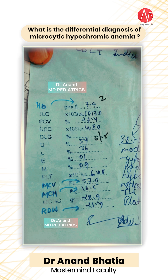For children aged six months to five years, the classification is: less than 7 g/dL is severe anemia, 7 to 10 is moderate anemia, 10 to 11 is mild anemia, and more than 11 is non-anemic. So this patient has moderate anemia.